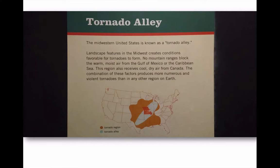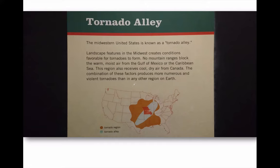A couple years ago I took my kids to the St. Louis Science Museum, and there was an exhibit on tornadoes. A sign said: 'Landscape features in the Midwest create conditions favorable for tornadoes. No mountain ranges block the warm, moist Gulf of Mexico air or Caribbean Sea moisture. This region also receives cool, dry air from Canada.' Then it said this combination produces numerous and violent tornadoes more than anywhere else on Earth. People just seem to think that every time cold Canadian air meets Gulf of Mexico moisture, tornadoes happen. That's not what happens. All that does is trigger the development of thunderstorms. The formation of the tornado is much more elegant, much more localized — it's a micro-scale event.